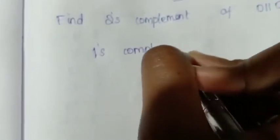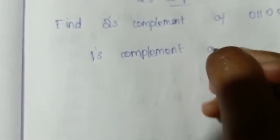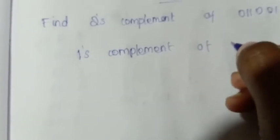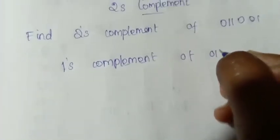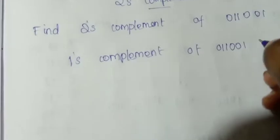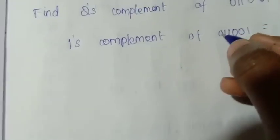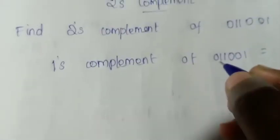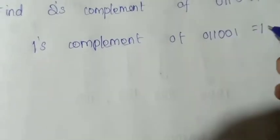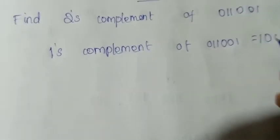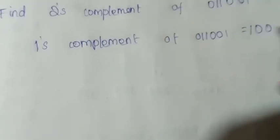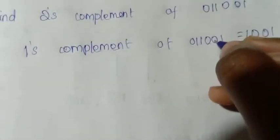One's complement of 0, 1, 1, 0, 0, 1 is equal to: 0 means 1, 1 means 0, 1 means 0, 0 means 1, 0 means 1, 1 means 0.